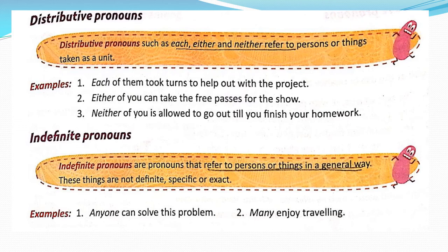Now let us see what are indefinite pronouns. Indefinite pronouns are pronouns that refer to persons or things in a general way. They are not definite, specific, or exact. For example, 'Anyone can solve this problem' — we are not mentioning any specific person, but speaking generally. Another example: 'Many enjoy traveling.'